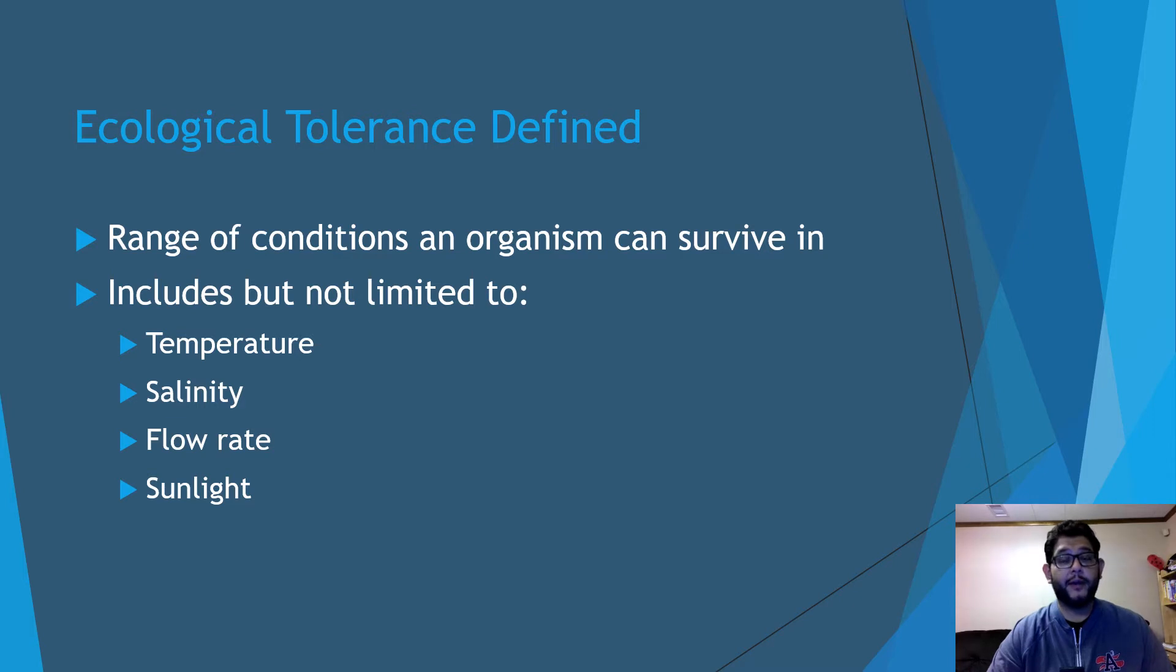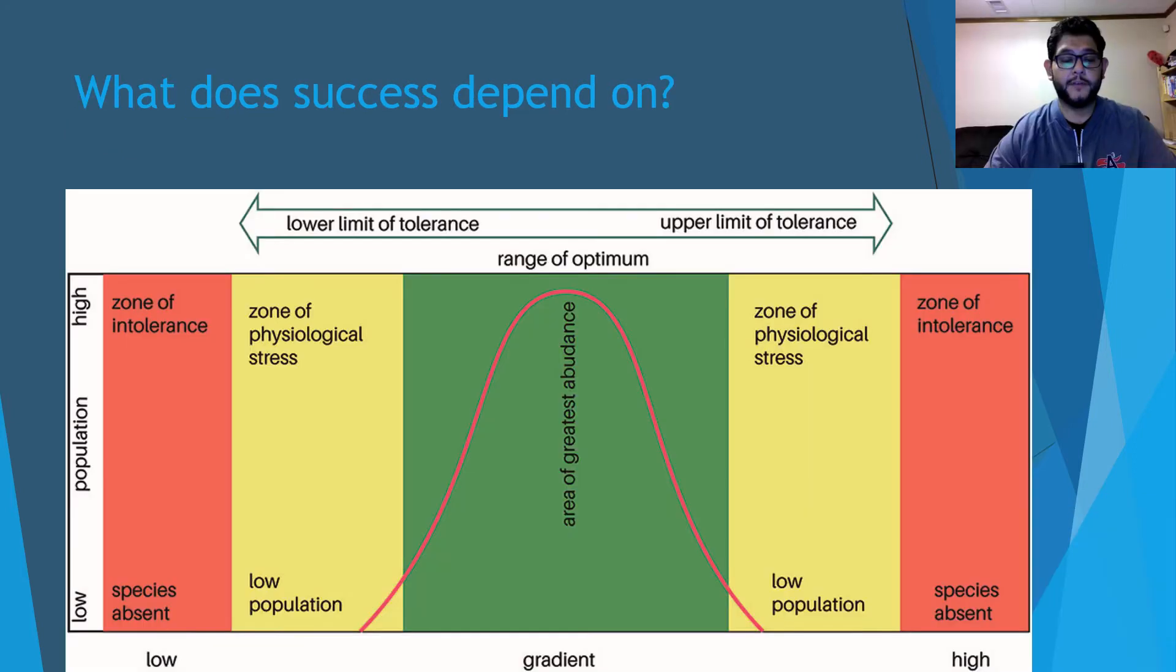Some birds cannot handle migrating over water because there are no thermals coming off the water. So you could not only say range is limited to conditions, but you can also say range is limited to certain habitats as well. So what does this success depend on? This is a really good diagram that shows a little bit about where this would go.